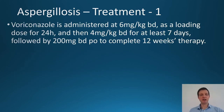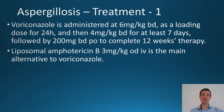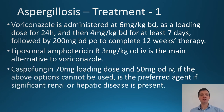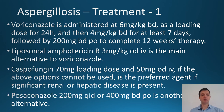So what is the treatment? The ideal first-line treatment is voriconazole, administered at 6 mg/kg twice a day as a loading dose over 24 hours, then reduced to 4 mg/kg for at least seven days, followed by 200 mg twice a day to complete 12 weeks of therapy. If voriconazole is unobtainable, liposomal amphotericin B 3 mg/kg once daily IV is the main alternative. If there is a problem with renal or hepatic disease, caspofungin 70 mg loading dose then 50 mg once daily IV can be used. If a liquid preparation is needed, posaconazole 200 mg four times a day or 400 mg twice daily is another good alternative.